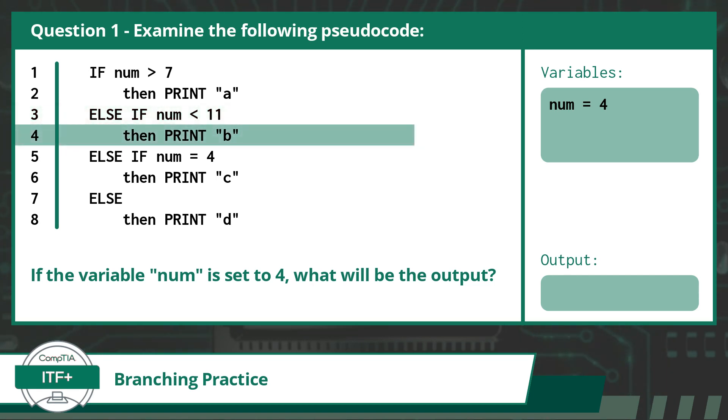The only statement in this branch is to print, which means to output, the string b. So, the answer to this question is b.